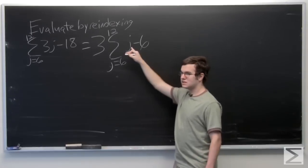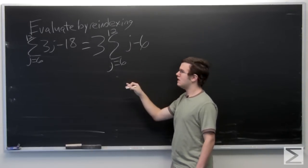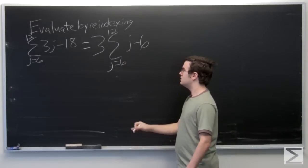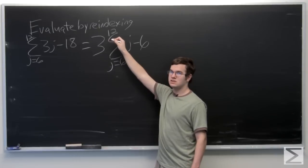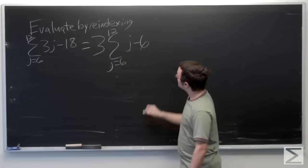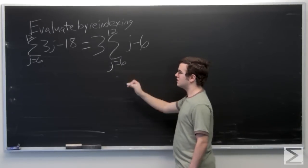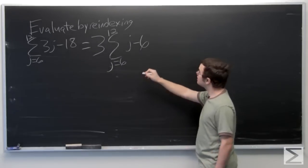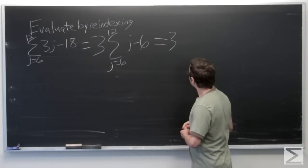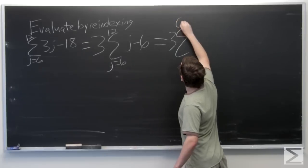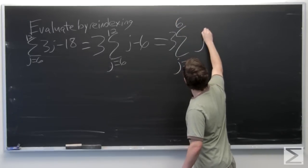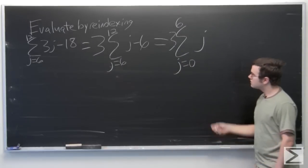So in order to re-index and get j by itself, we have to move the entire index down by 6 places. So we'll subtract 6 from the index here of 12 and 6 from 6 here. And that, by re-indexing, will give us the solution, gives us this summation here.